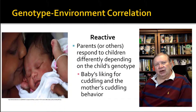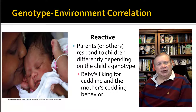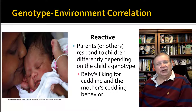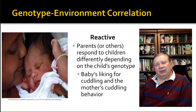Let's look at the second type of GE correlation: reactive. People respond differently to children based on variables like how much kids like to cuddle. Here's a father and baby having a very nice cuddle — there's nothing more pleasurable than holding a baby. Very pleasant feeling, in most cases.